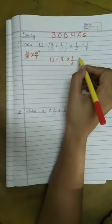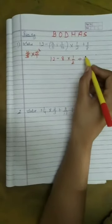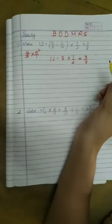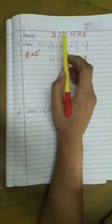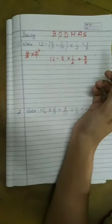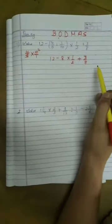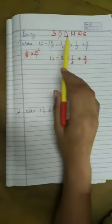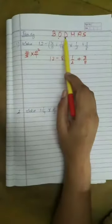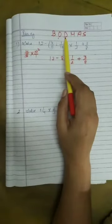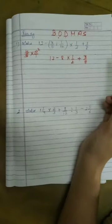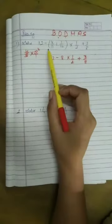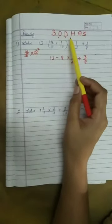Into 1 by 2, sorry, plus 3 by 8. Now, second we have to solve the order. Order means power or square root. In this expression there is no power given, nor any square root given. So we skip order. Now, move to third division. Now we have to divide, but there is no division. So we skip division also.